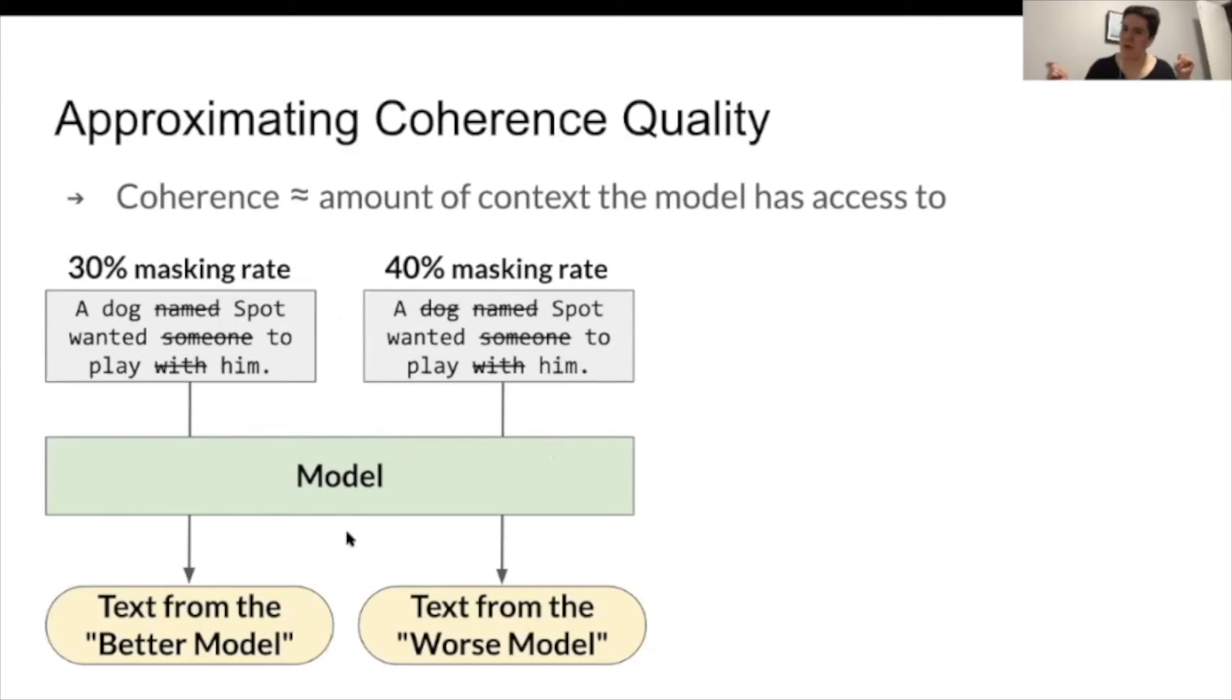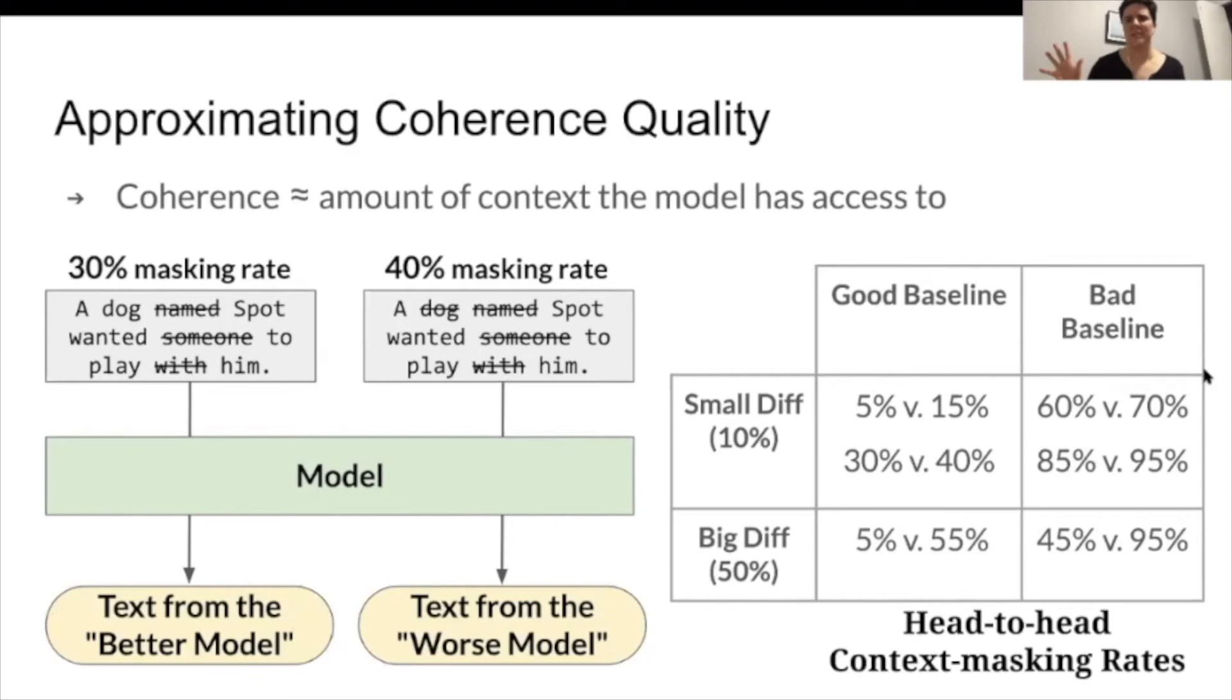And this gets us a better model, or a better generated text, and a worse generated text. So better being had more information. We did this for a bunch of masking rate pairings in order to analyze different aspects of what might make people more or less accurate in their judgments.